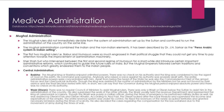Mughal administration: The Mughal rulers did not immediately deviate from the system of administration set up by the sultans and continued to run the administration on the same lines. The Mughal administration combined Indian and non-Indian elements, described by Dr. Jain Sarkar as the Perso-Arabic system in an Indian setting. The first two Mughal rulers, Babur and Humayun, were so engrossed in political struggle that they could not pay attention to improving administrative machinery.